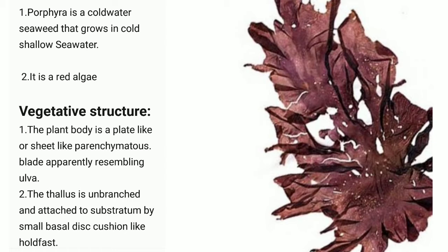The thallus is unbranched and attached to the substratum by a small basal disc cushion-like holdfast. A holdfast is a root-like structure which helps aquatic organisms like Porphyra to attach to the substratum. On the screen you can see the image of Porphyra.